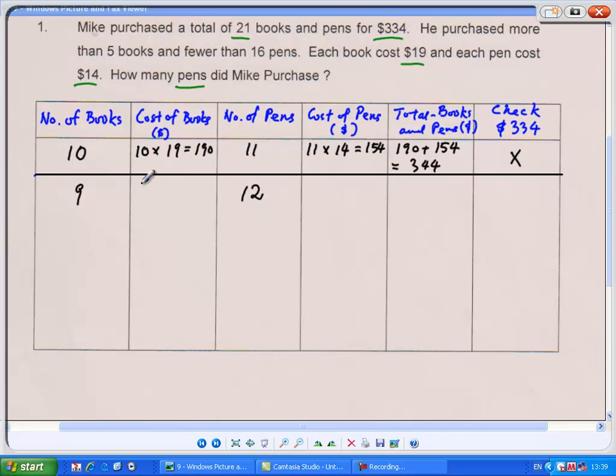Let's calculate the cost. 9 books times $19, that would give us $171. The cost of the pens, 12 pens times $14, that would give us $168. The total cost, $171 plus $168, that would give us $339. Which is still too much. So it's the wrong guess.